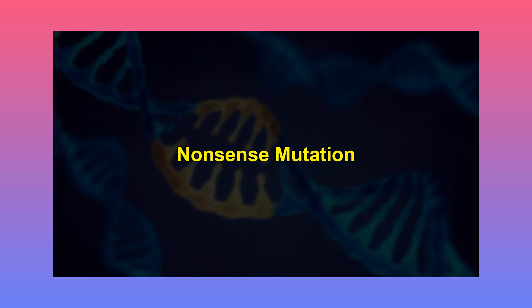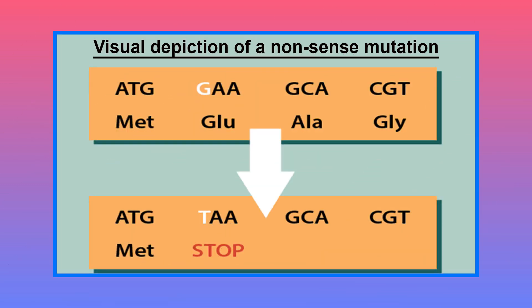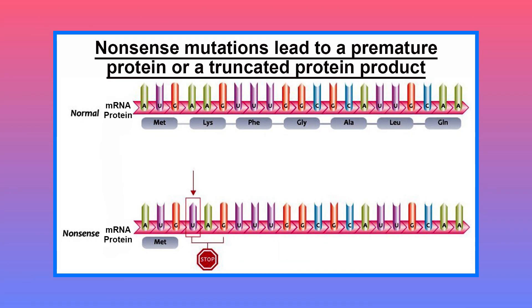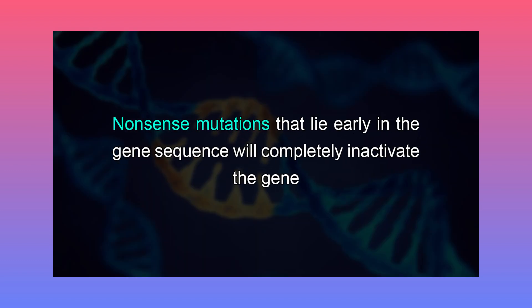A nonsense mutation is a base change that converts a codon within the coding sequence into a stop codon, which will terminate protein synthesis. There is only a limited set of sense codons that can be converted to a stop codon by a single base change. Nonsense mutations lead to a premature or truncated protein product. Nonsense mutations that lie early in the gene sequence will completely inactivate the gene, while those that lie late in the gene sequence may not disrupt gene function.